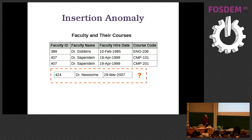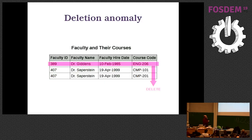The insertion anomaly: consider a faculty schema for professors who give courses. Each professor might teach one or several courses. But a newly hired professor doesn't have a course yet, and with this model you cannot even enter their information. That's insertion anomaly — you cannot insert the data. And the deletion anomaly: if this professor stops teaching a course and you delete the row, you lose their record entirely. They disappear from the system because they don't have a course anymore.